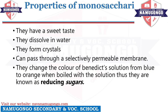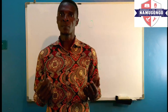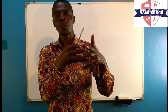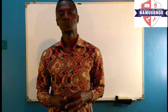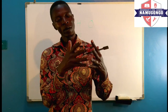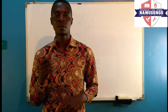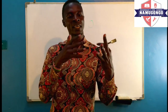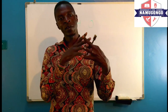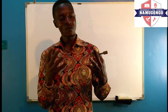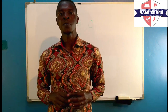Fourth, monosaccharides can pass through a semi-permeable membrane, also called a selectively permeable membrane. The membranes of our cells are semi-permeable, meaning they allow some materials to pass through but not others. Monosaccharides are one of the things that can pass through cell membranes — if you eat glucose or fructose, they can easily diffuse through the cell membrane.